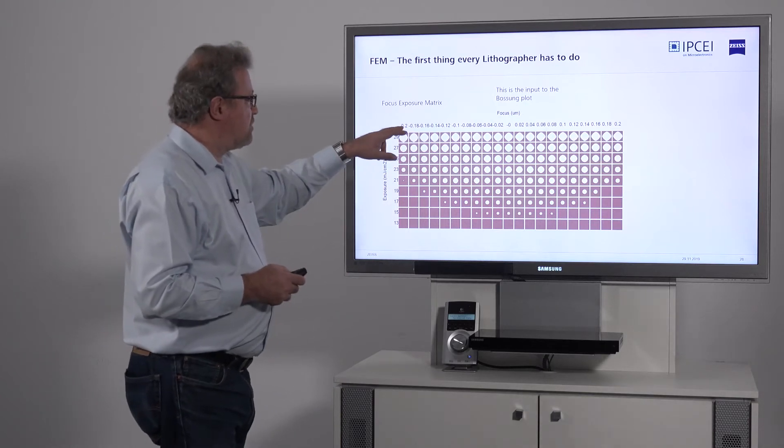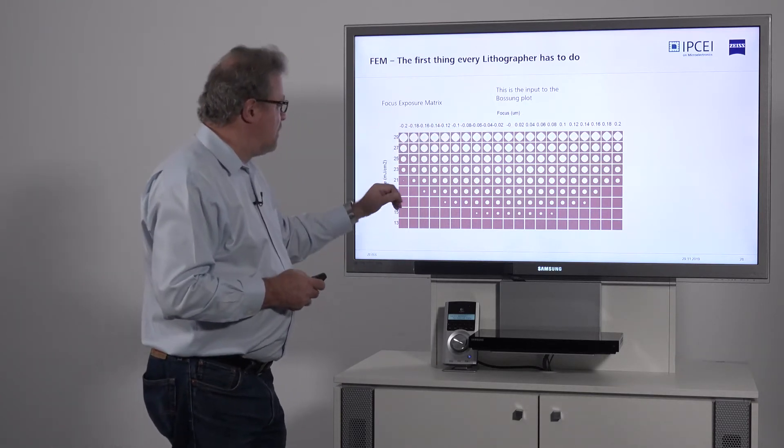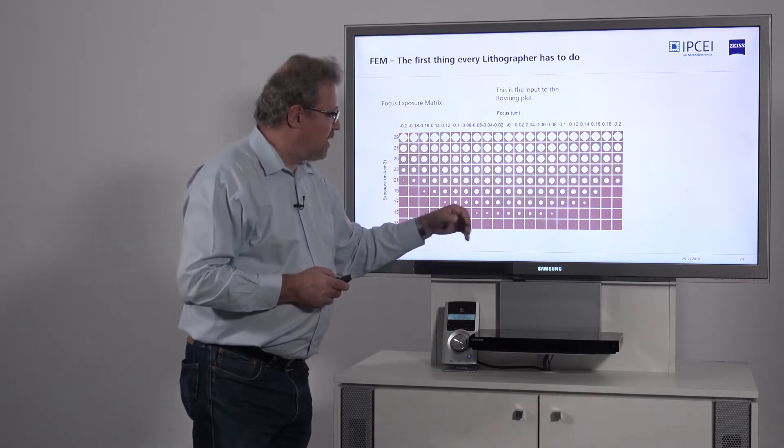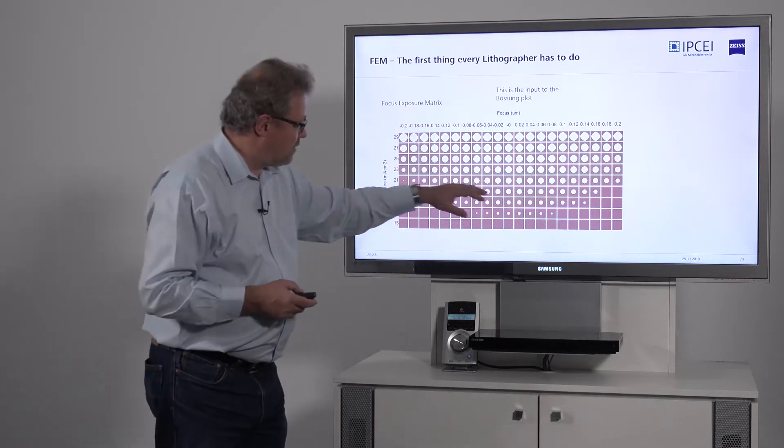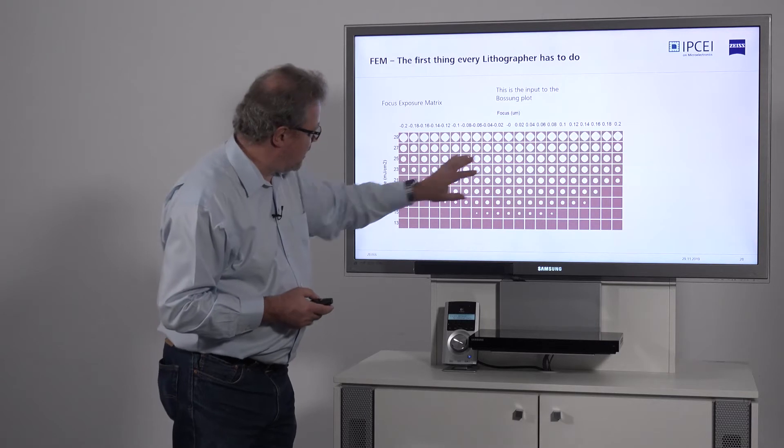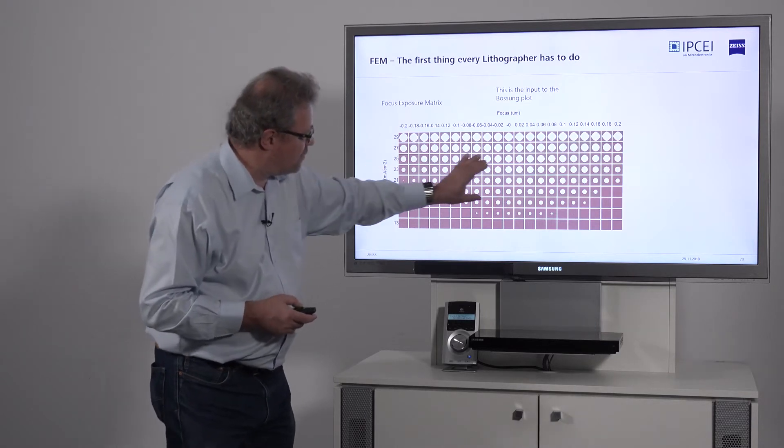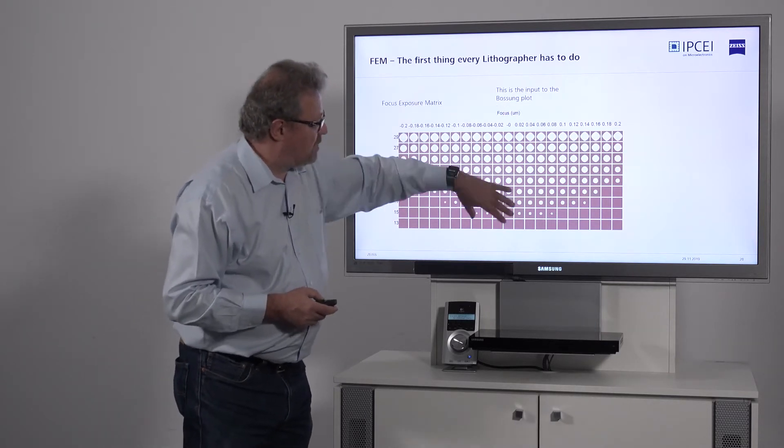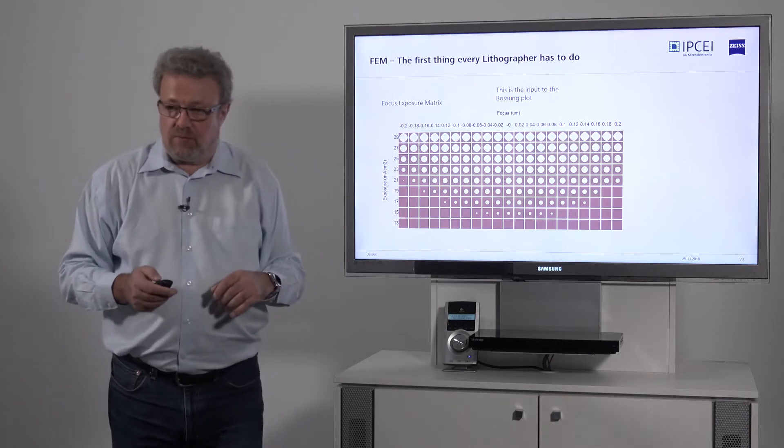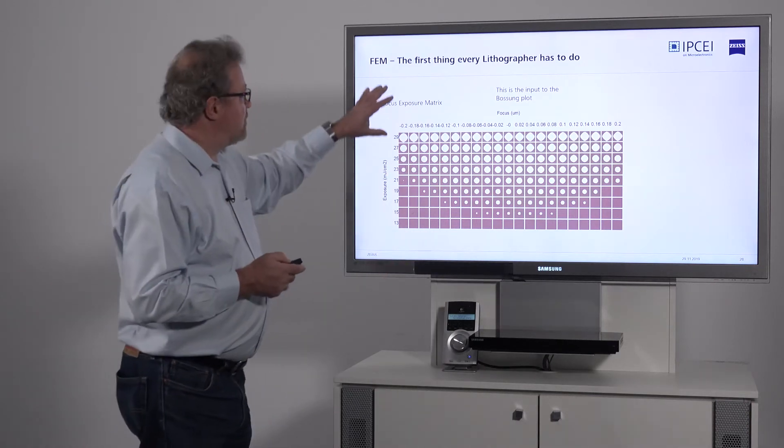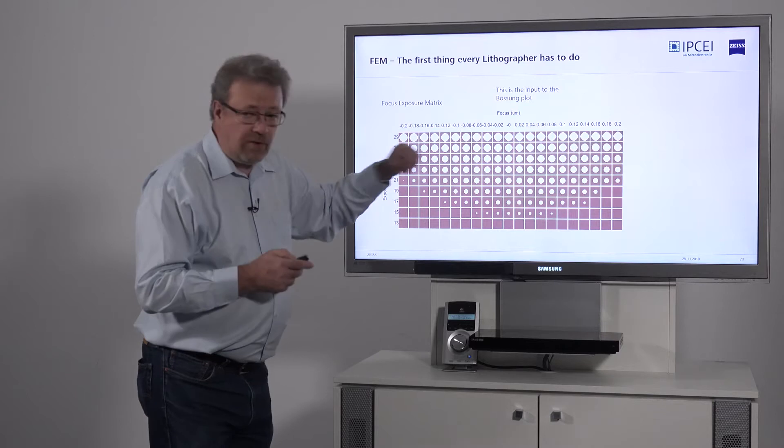Then for each focus and dose, you get a certain hole size. You know what your spec is, so you can say, 'I need to stay within that exposure dose range and within a certain focus range to print this.' Once you've exposed your FEM and measured all those CDs,